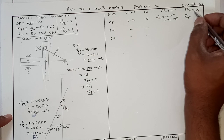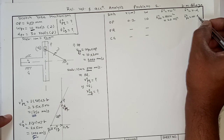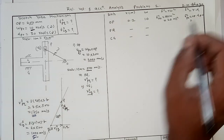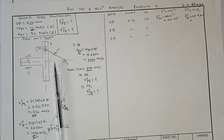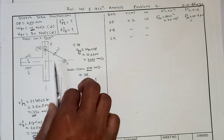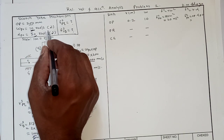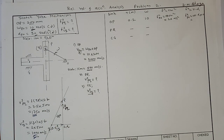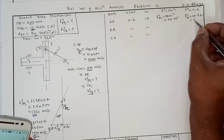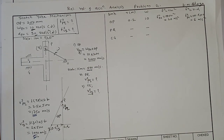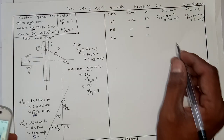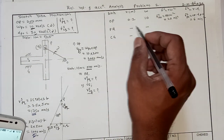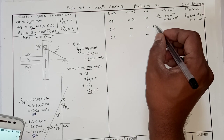Tangential acceleration of P relative to O equals the radius of rotation OP multiplied by the angular acceleration of P relative to O. OP is 0.2 meters and angular acceleration is 30 radians per second squared, so 0.2 × 30 = 6 meters per second squared. Next, for slider PQ, it will have only sliding acceleration.